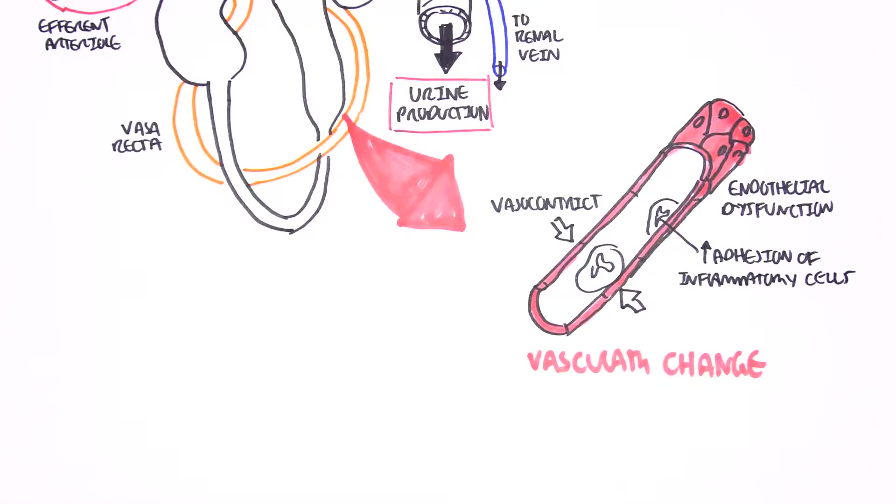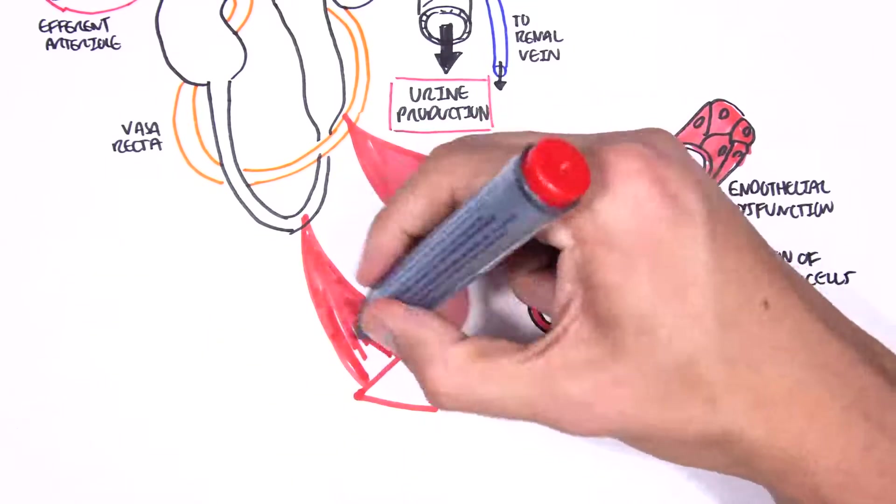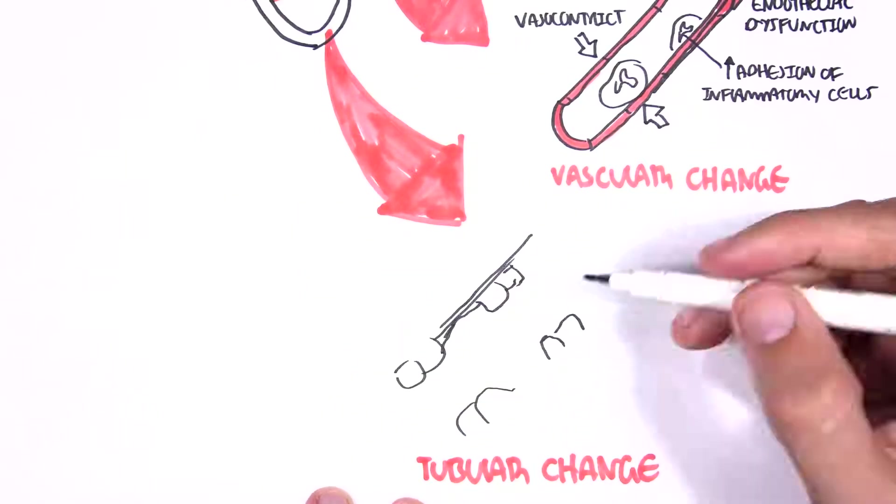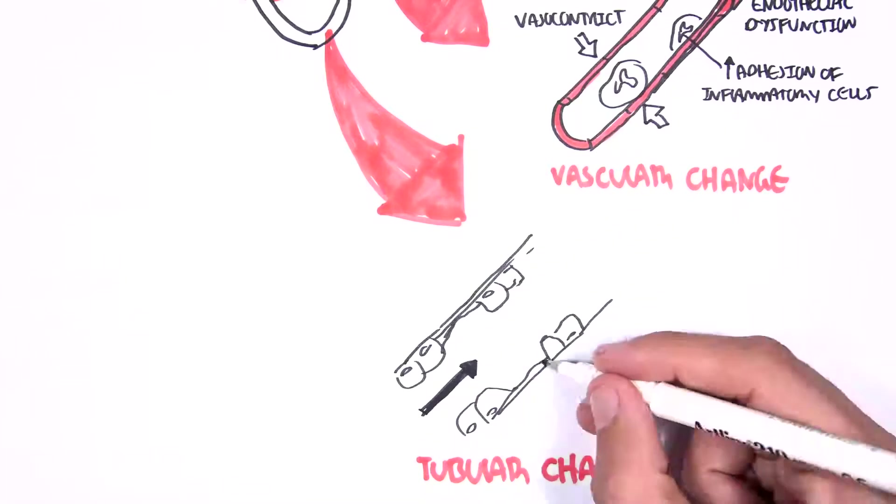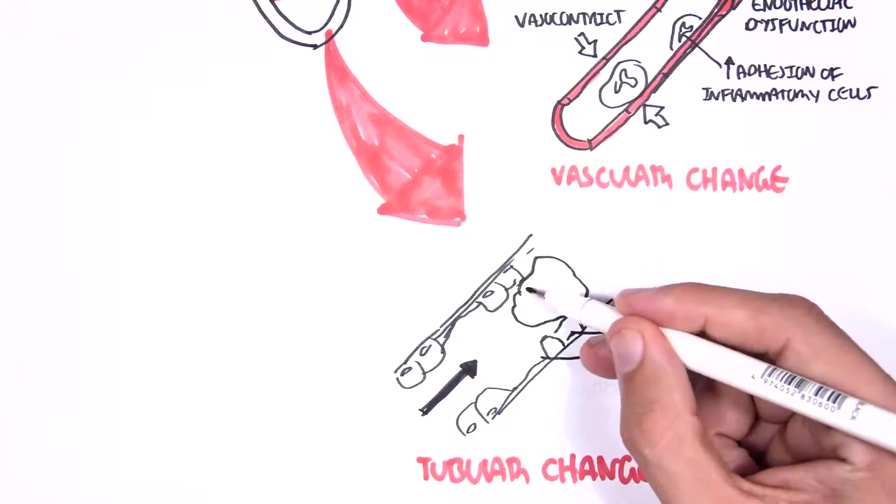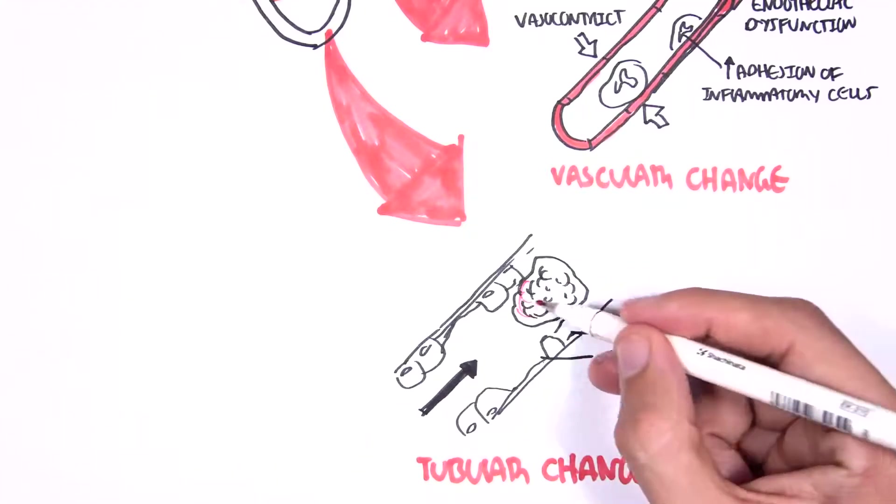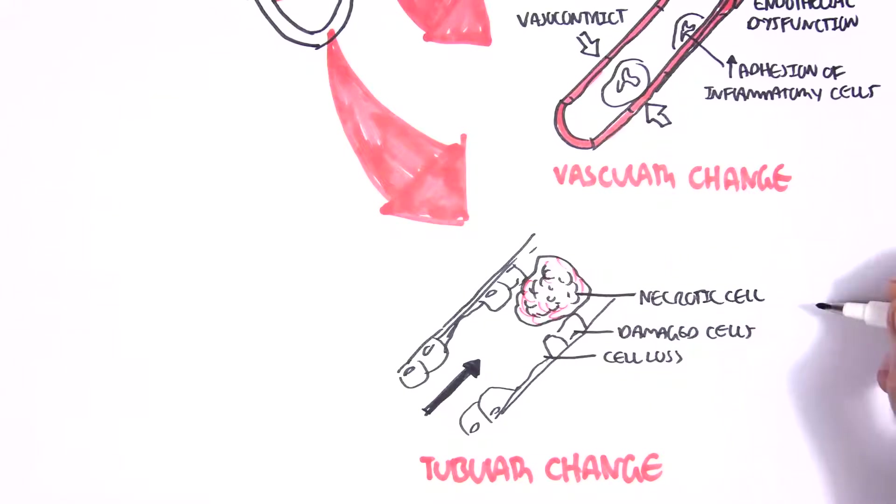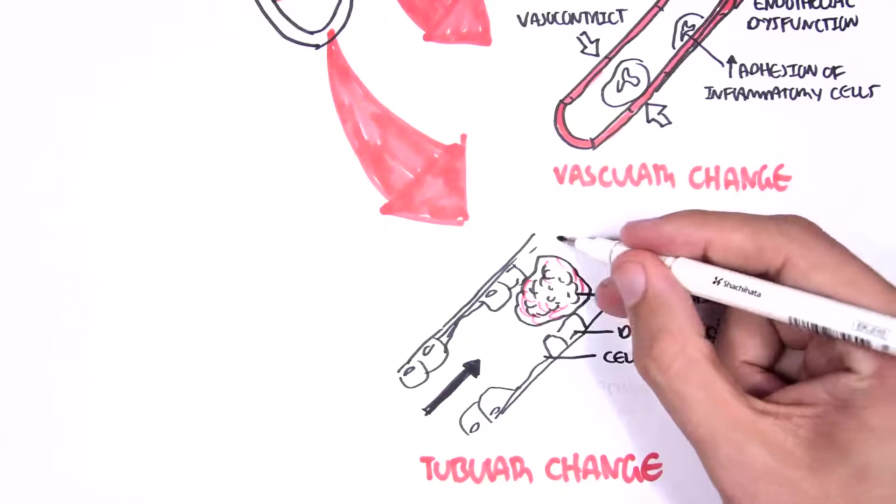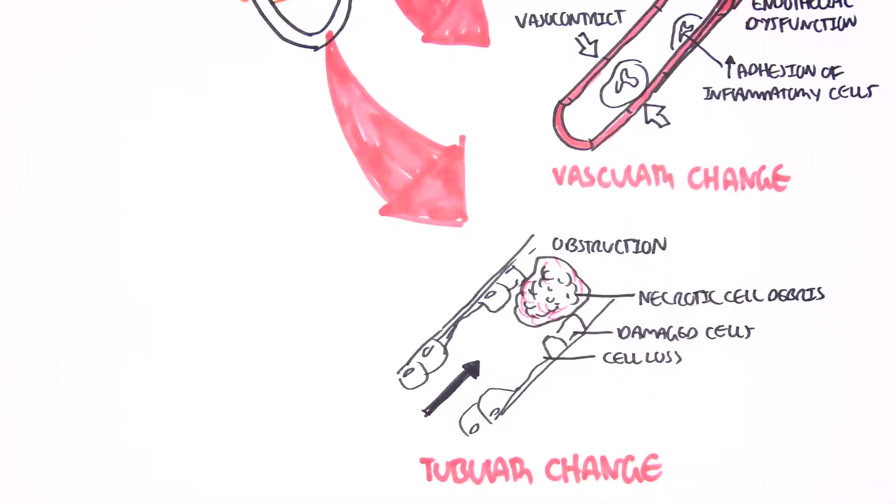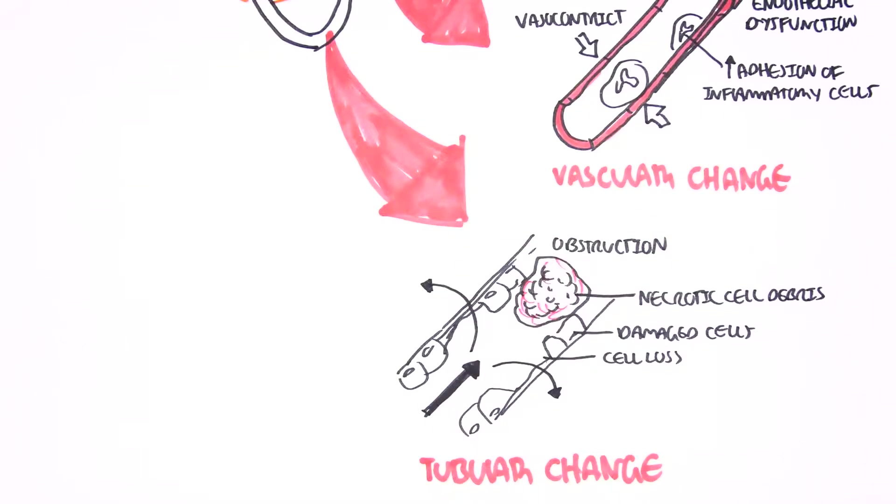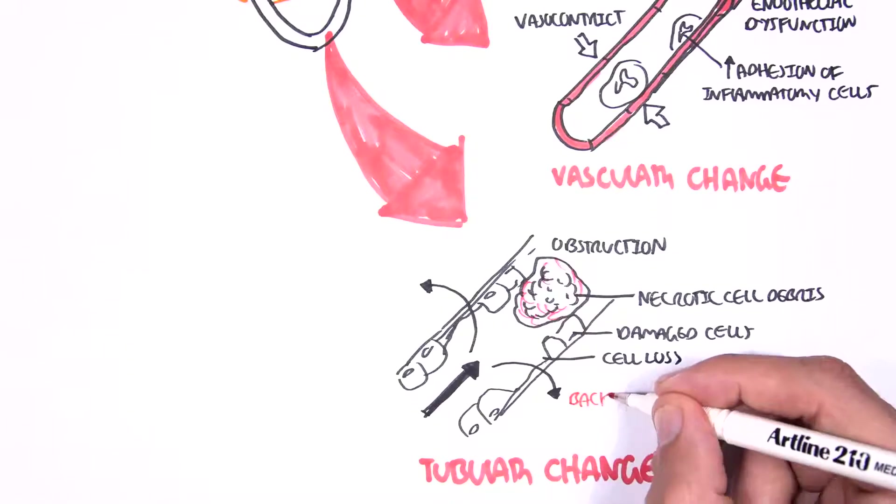The second change we see is tubular changes. In tubular change, for example here is within the tube of the nephron. The filtrate normally goes this way, but we now see cell loss and damaged cells. This can be due to necrosis or it can later cause apoptosis. These can form necrotic bodies which will literally cause an obstruction in the tube. As a result, the filtrate will back leak, the urine will back leak.